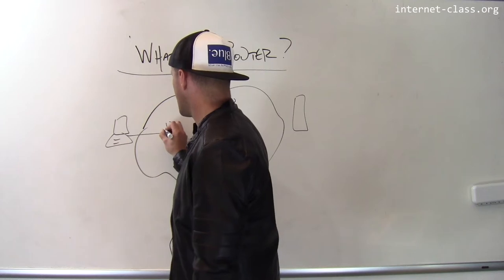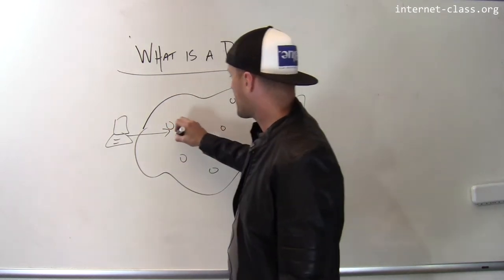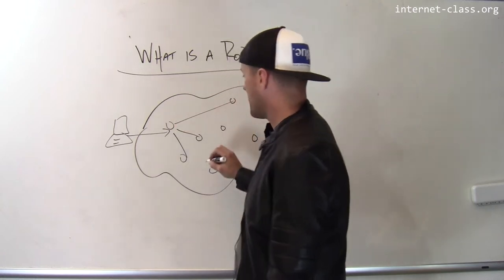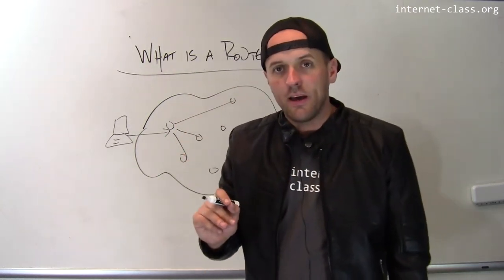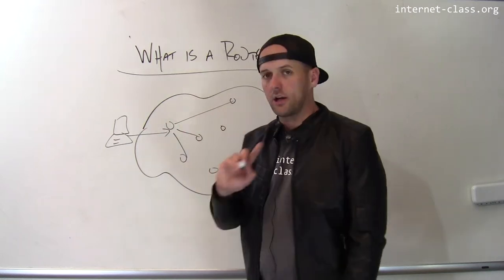So let's say my laptop connects to this router here. This router may have connections to several other routers on the internet. And its job is to figure out which link this incoming packet should go out on.